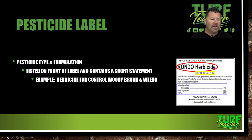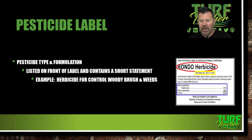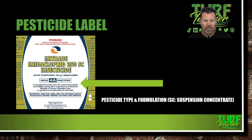Looking at Rondo herbicide again — the pesticide type and formulation is listed on the front of the label and contains a short statement. Example: herbicide for control of woody brush and weeds. We've got the EPA registration number here: 333-111-222 — that's definitely a fictitious number. The pesticide type and formulation — here we have a suspension concentrate. M-Trade 350SC is an insecticide.